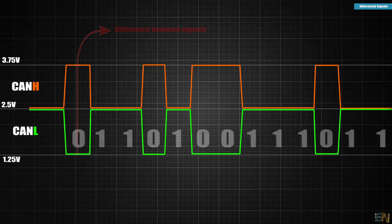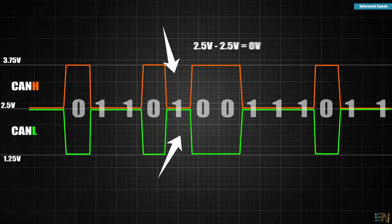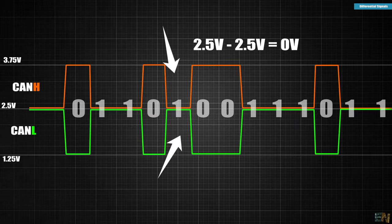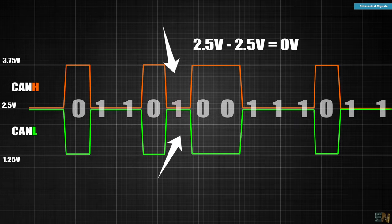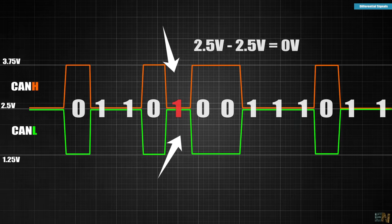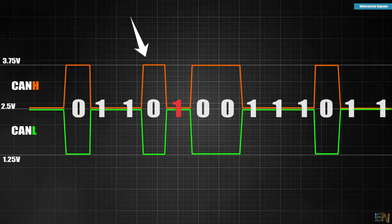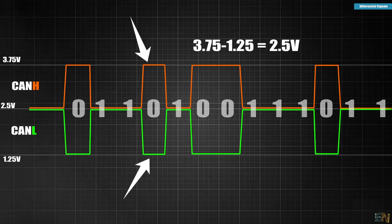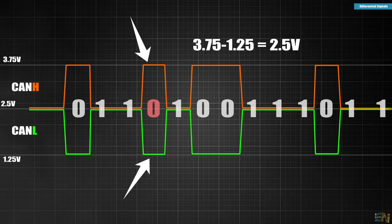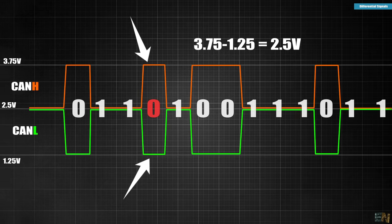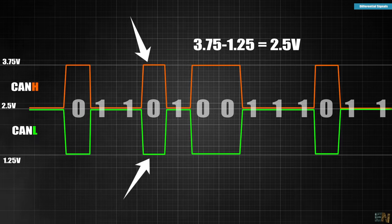For example, when H is low and L is high, the differential level would be 2.5V minus 2.5V equal to 0 and that represents a 1 bit. But when H is high and L is low, we have 3.75V minus 1.25V equals to a voltage of 2.5V and that represents a 0 bit.